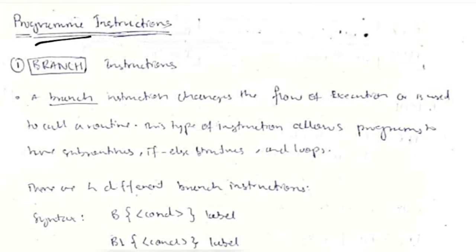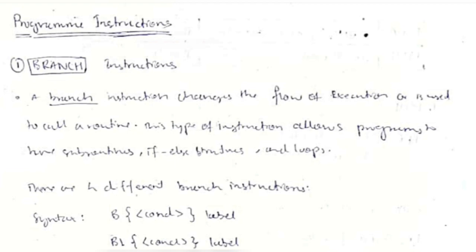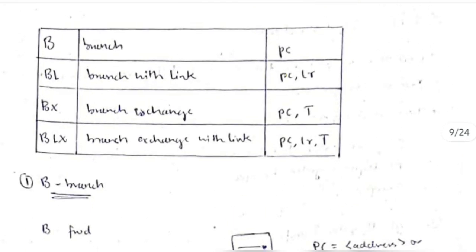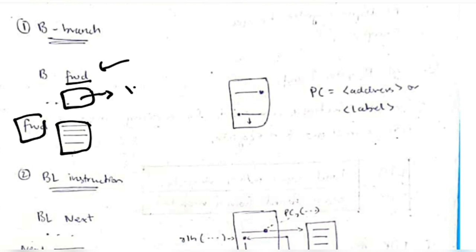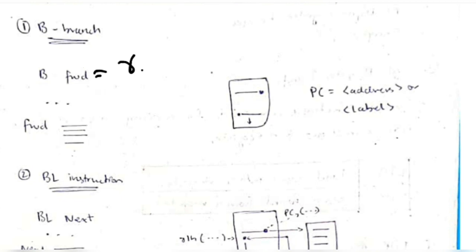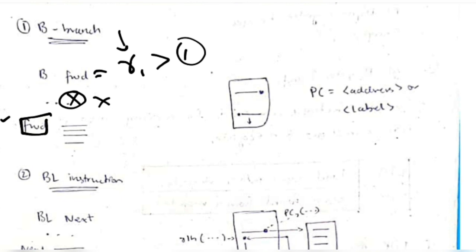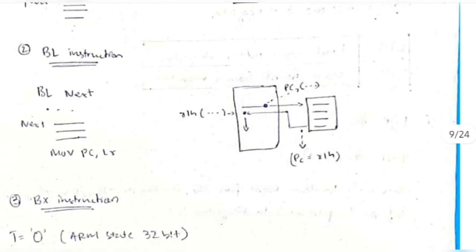The second half of the module covers program instructions: branching, load/store, and swapping. Branching has four types: B (branch), BL (branch with link), BX (branch exchange), and BLX. A plain B instruction jumps execution to a labeled location, skipping the code in between. This is useful for conditional jumps — for example, if r1 is greater than 1, skip a block of code and continue from a different label.